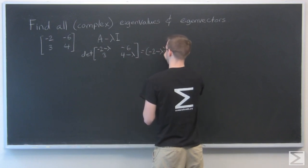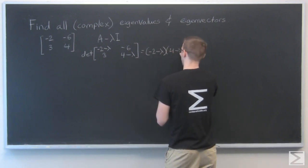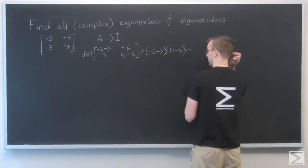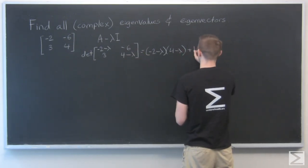We get minus 2 minus lambda times 4 minus lambda minus 6 times minus 3, that's negative 18, so plus 18.